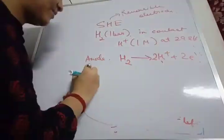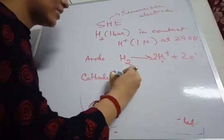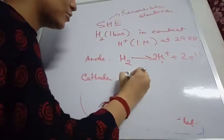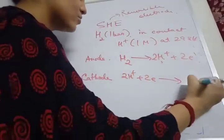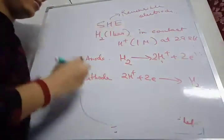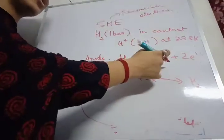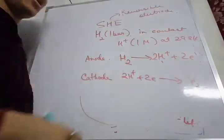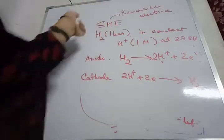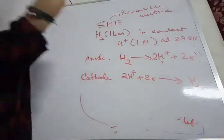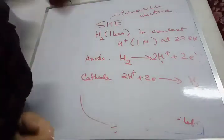When SHE acts as cathode, the reaction is 2H⁺ + 2e⁻ → H₂. So anode has oxidation and cathode has reduction. This is basically the nature of the standard hydrogen electrode — it is a reversible electrode.